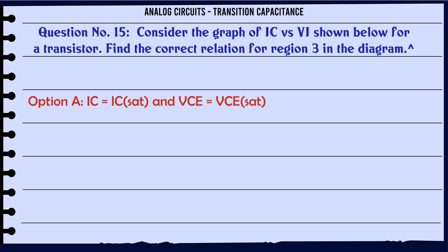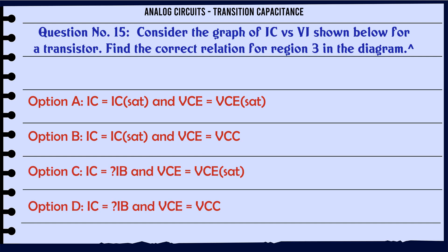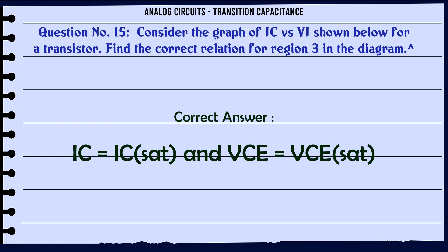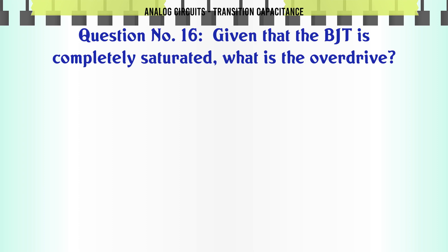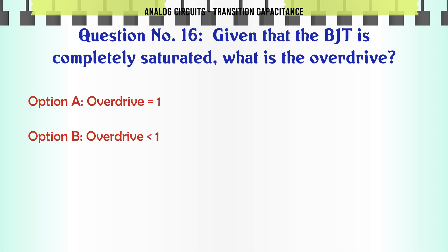Consider the graph of Ic vs VCE shown below for a transistor. Find the correct relation for region 3 in the diagram. A: Ic = IcSAT and VCE < VCESAT, B: Ic < IB, Ic = IcSAT and VCE > VCESAT, C: Ic > IB and VCE < VCESAT, D: Ic > IB and VCE > VCESAT. The correct answer is Ic = IcSAT and VCE < VCESAT.